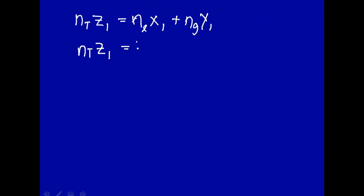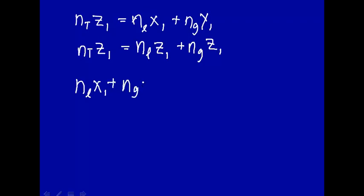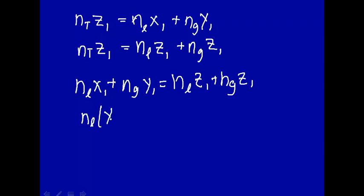That's equal to the total number of moles in the liquid phase times the total mole fraction of component one. So let's equate these two: the total number of moles in the liquid phase times x1 plus the total number of moles in the gas phase times y1, equals the total number of moles in the liquid phase times z1 plus the total number of moles in the gas phase times z1. Now we can rearrange this: the total moles in the liquid phase times (x1 minus z1), taking out the total moles in the gas phase, gives (z1 minus y1).